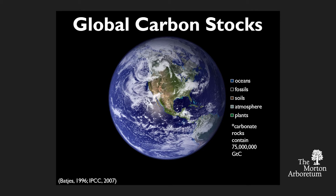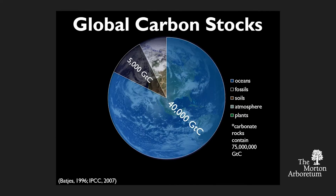Starting with the globe, these are the major carbon stocks that we find on the earth. The vast majority of carbon is found in long-term carbon storage pools such as carbonate rocks, the oceans, or fossil resources. Those numbers are in gigatons of carbon — billion metric tons of carbon. That's a lot of carbon; those are big stores.